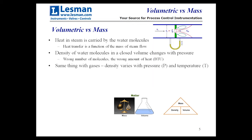It's important to understand that when you have steam, the heat in steam is actually carried by the water molecules. That heat transfer is a function of the mass of that steam flow, not particularly the volume, because the volume can have different densities depending on what the pressure is. The density of water molecules in a steam pipe is related to the pressure. If you get the wrong number of molecules, you get the wrong amount of heat, and you get the wrong BTU input into the process.